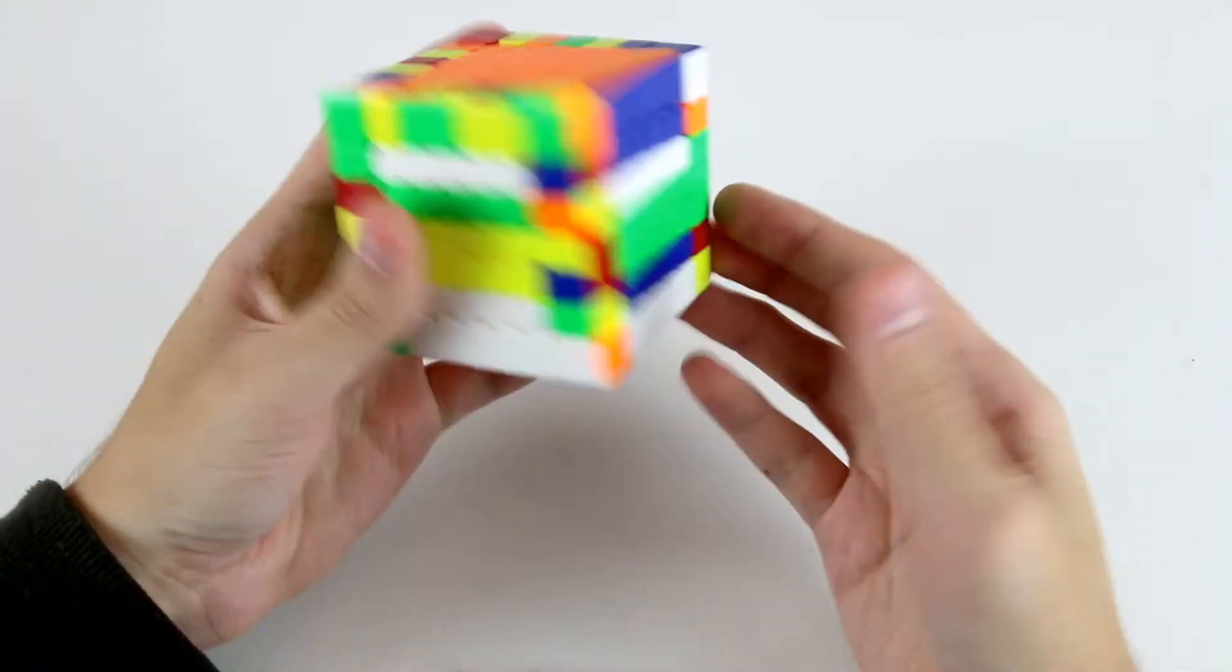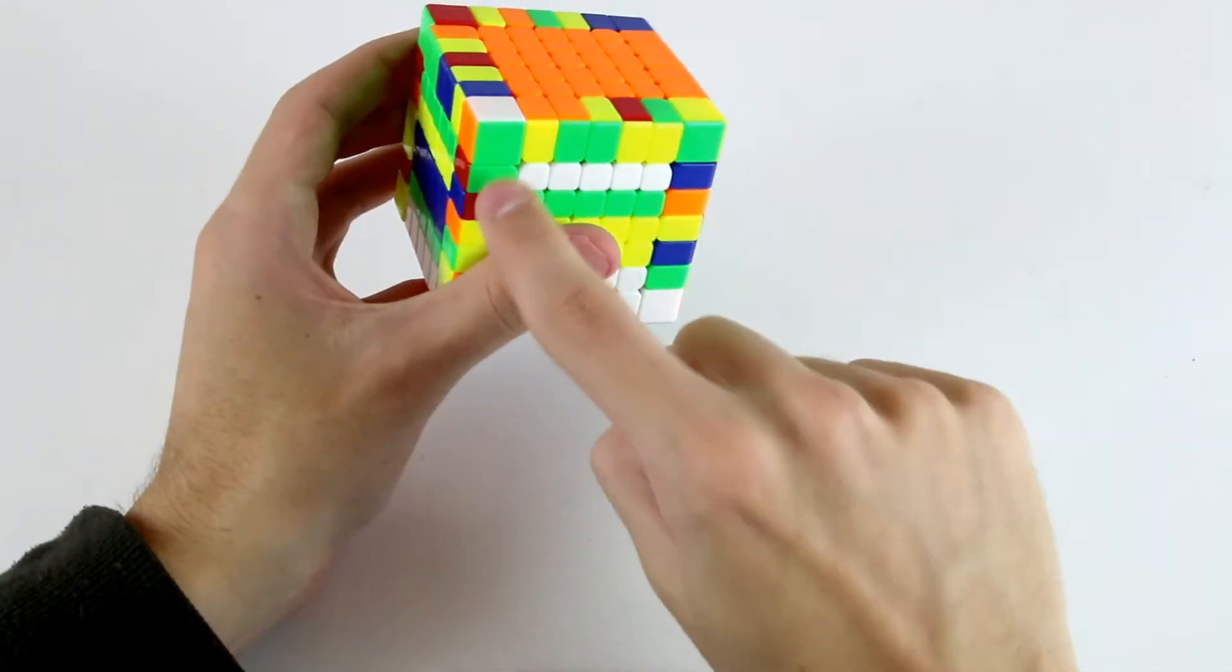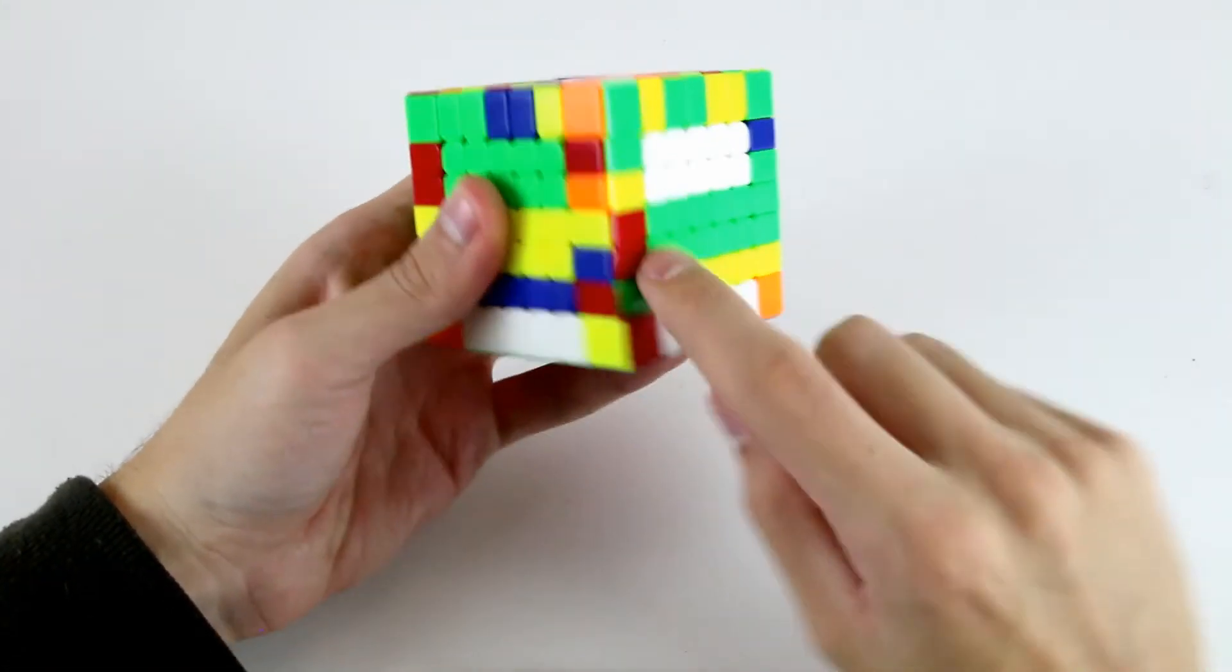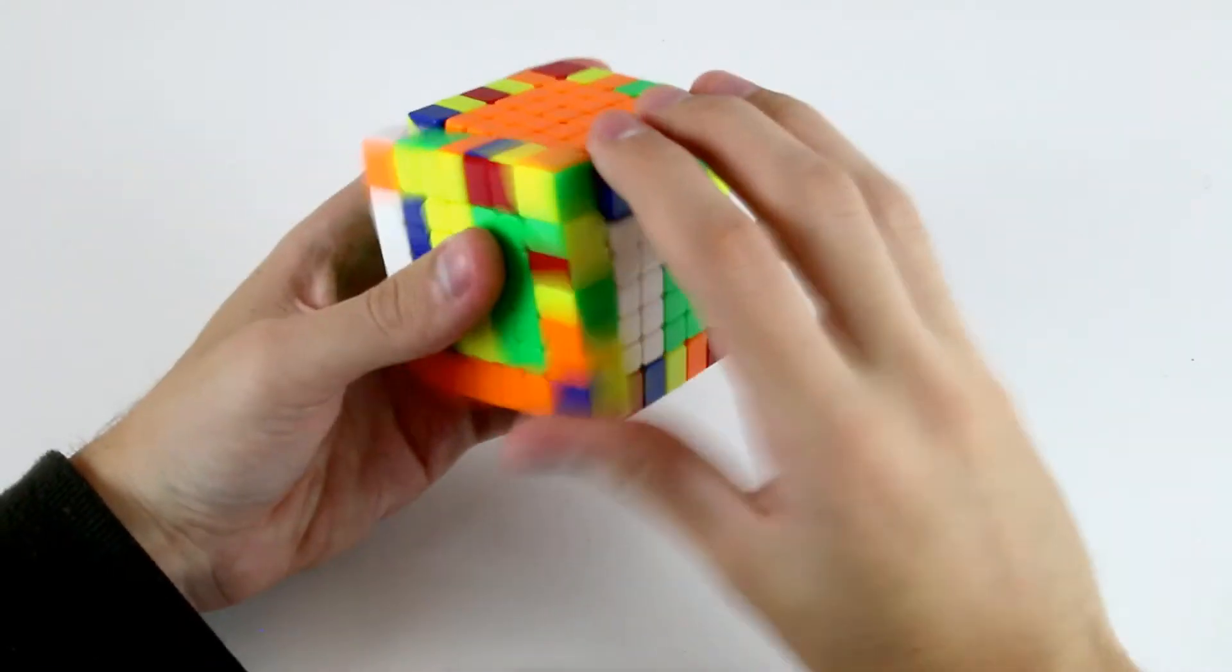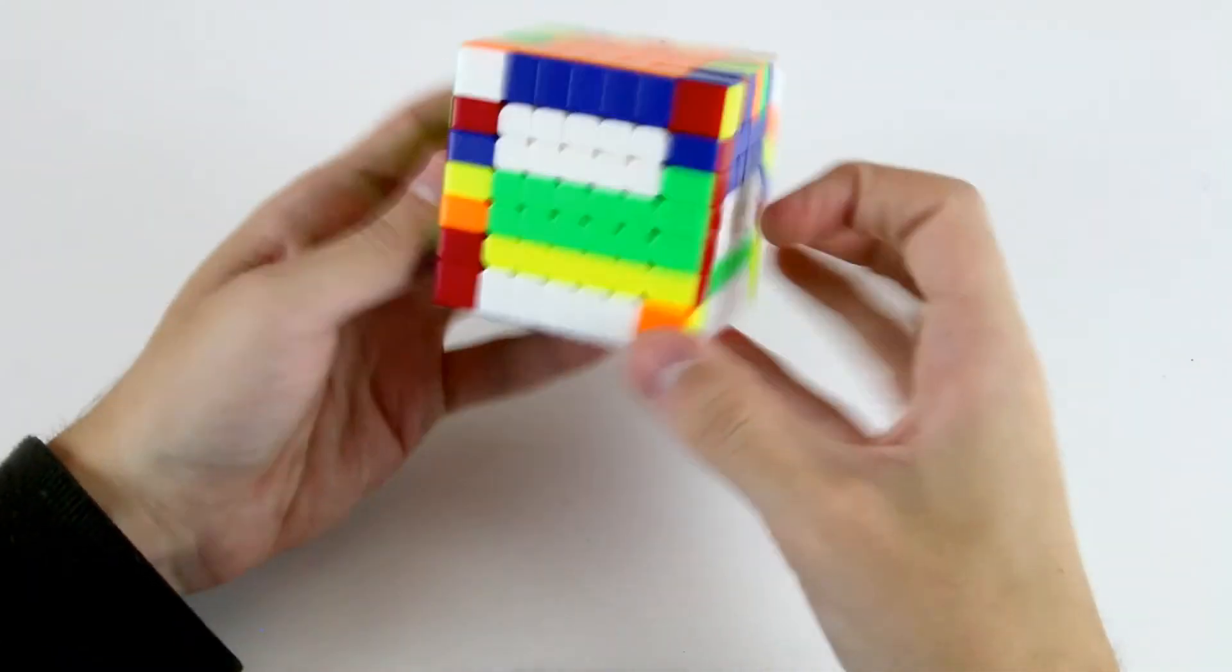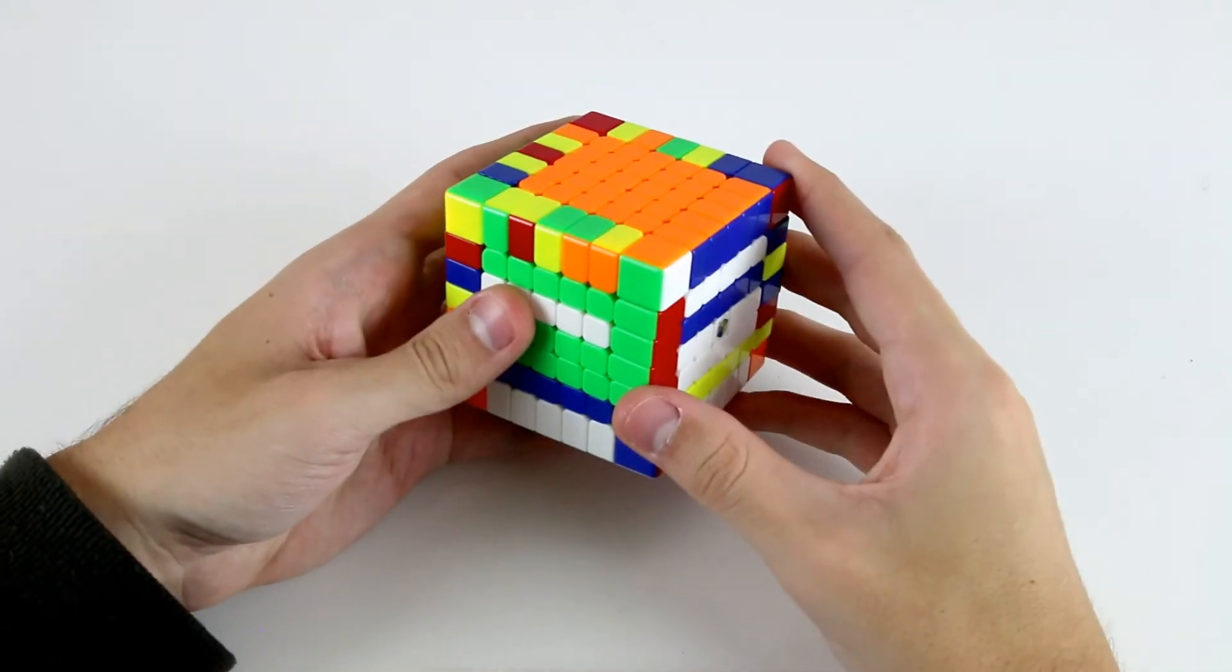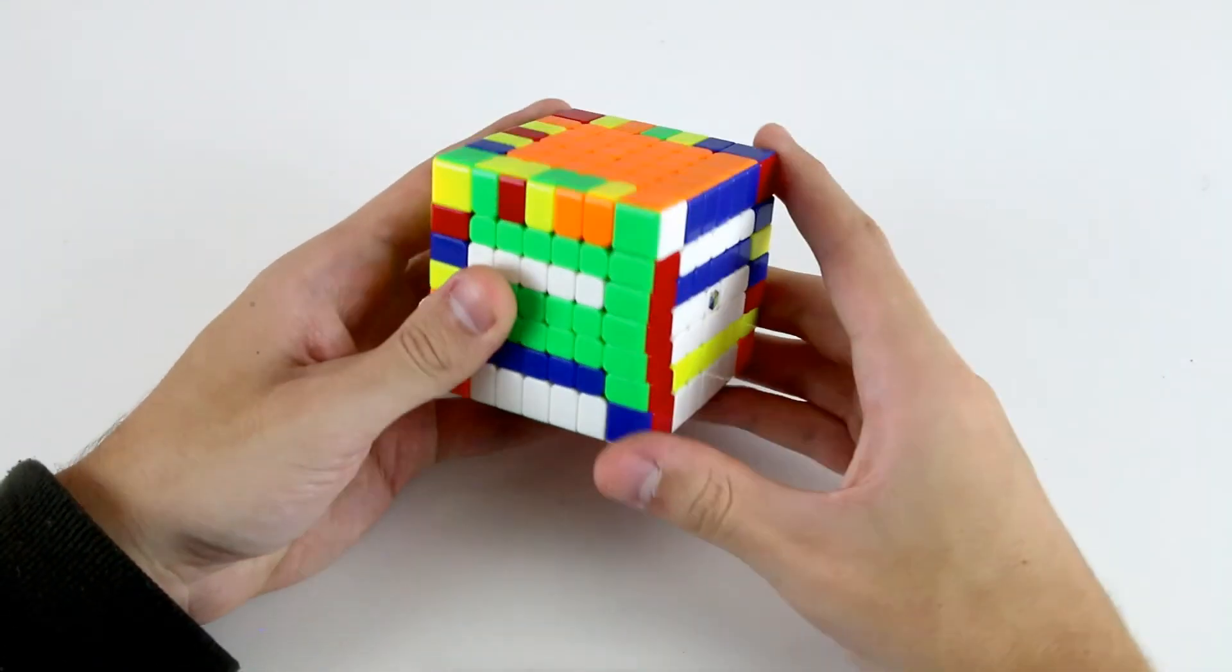The more efficient way of tackling something like this is to actually bring these two outer wings into the same area so that when we flip them, when we do the flipping algorithm, it flips them both, and then we only need to do one flipping algorithm to pair up these edges.